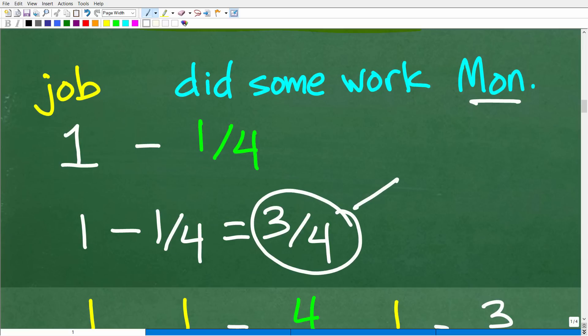So one minus one fourth is three fourths. Okay. Now, if you didn't quite see that and you're like, Oh yeah, if I take away one fourth from one, there's three fourths remaining. So that's how much work is still to be completed after Monday. Now, of course we did some work on Wednesday, but we're just going to take this one kind of task at a time, one day at a time.